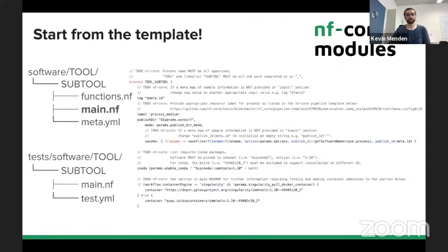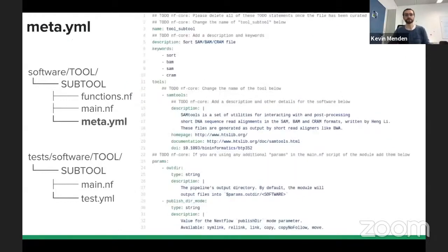There is a template available, which you can access with the NFCore modules create command, which will be available in the near future. But you can also just copy the files for now. This will give you templates for all of the necessary files. Here you see the template for the main.nf file, which has lots of to-dos that guide you along making a proper module. There's also the meta.yaml file, which is really important especially if you put stuff on NFCore modules, since these modules are made for a lot of people to reuse.